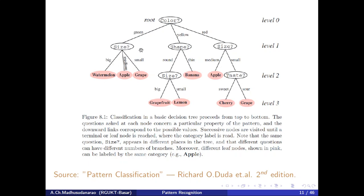My ultimate goal is to separate items into different classes as early as possible. Here shape might be helpful for yellow fruits — because banana is thin and I can separate it from grapefruit and lemon. But for the green fruits, shape is not helpful since they are all round.